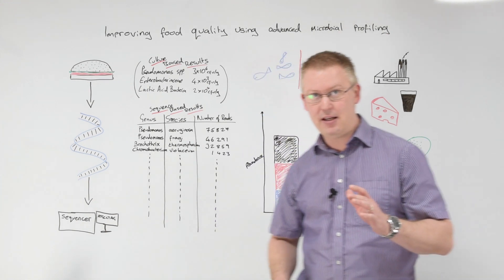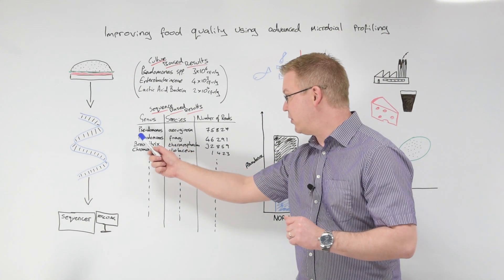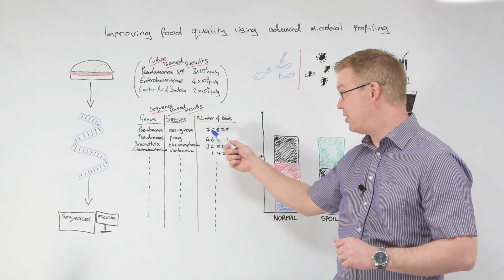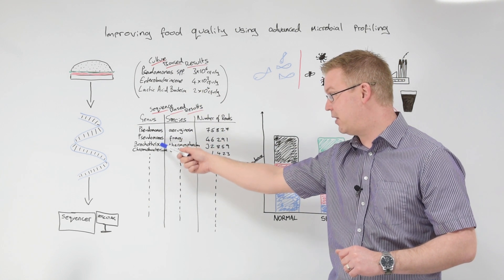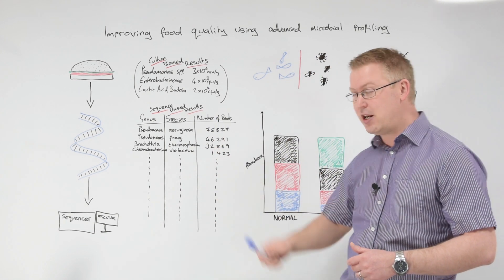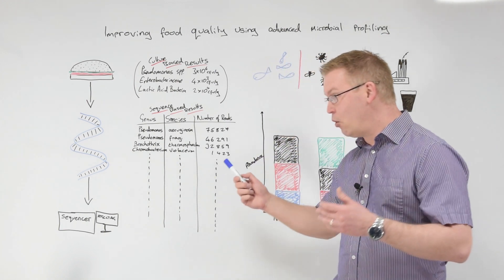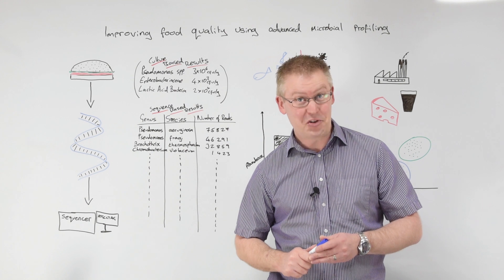With AMP, we get more information. So here we have the sort of results we get with our sequence-based results. We've got species of pseudomonas. So there's our pseudomonas counts, but here we've split those down into species. And we get a number of reads associated with those particular species.